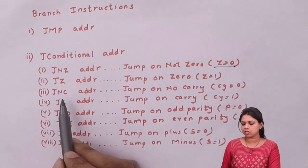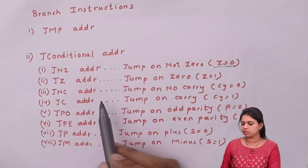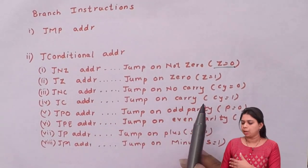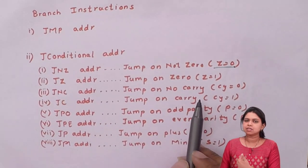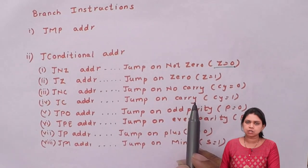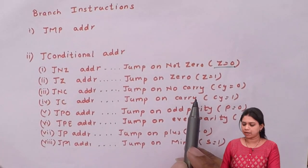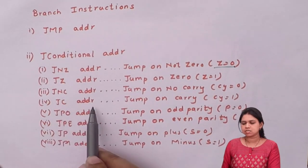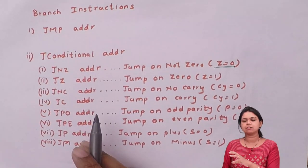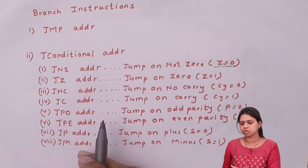Next is JNC address. JNC address means jump on no carry — meaning if your carry is not generated, i.e. if your carry flag is zero, then you will jump onto some address. JC address is jump on carry, so if your carry flag is equal to one, then only you will jump onto some address.